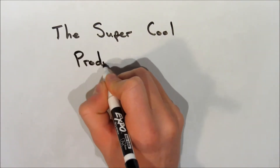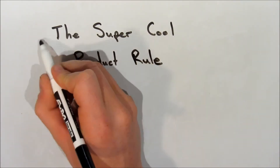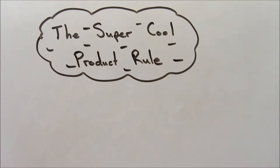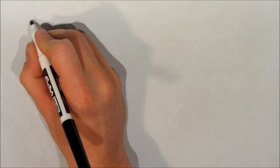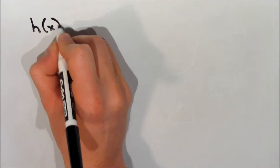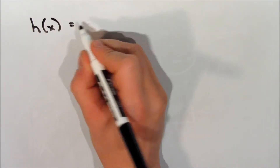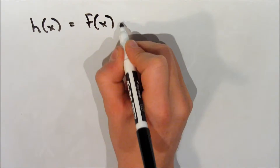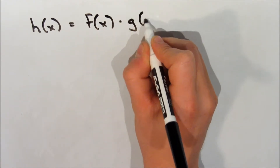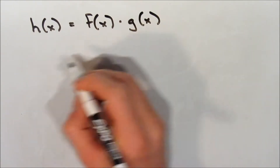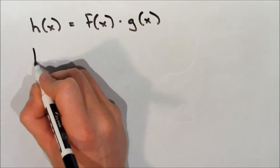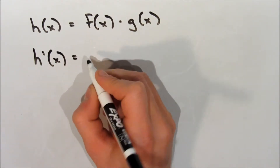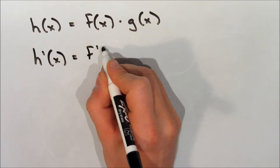In this video I'm going to be talking about how to find derivatives by using the product rule. First I'll explain what exactly the product rule is. If we have a function we'll call h of x, and it consists of two other functions multiplied by each other — f of x and g of x — then we can say that the derivative of h of x, h prime of x, is...